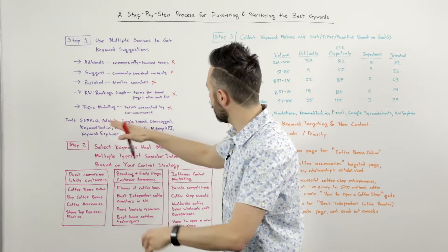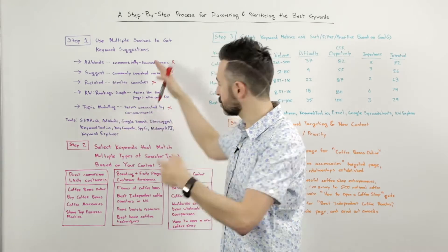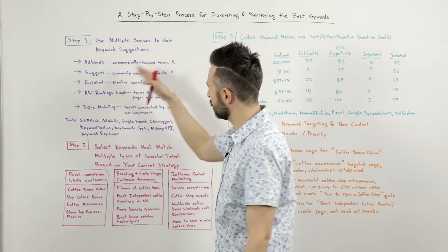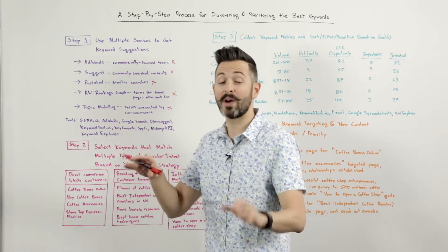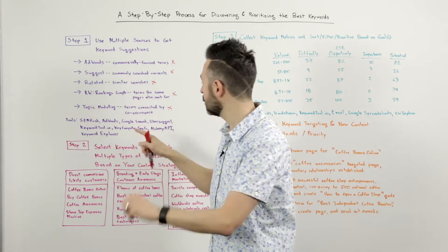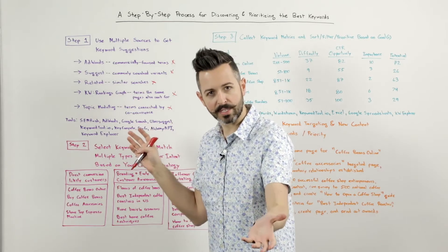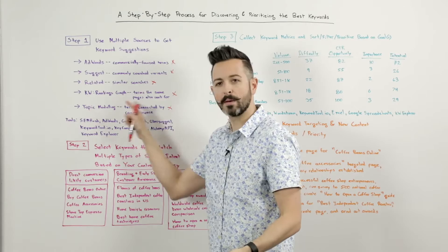A bunch of tools, right? SEMrush and AdWords. You can use Google Search for a bunch of these. Ubersuggest to get some of the suggestions. Keywordtool.io actually has a number of these inside it. KeyCompete and SpyFu are similar to SEMrush. Alchemy API helps you with topic modeling.